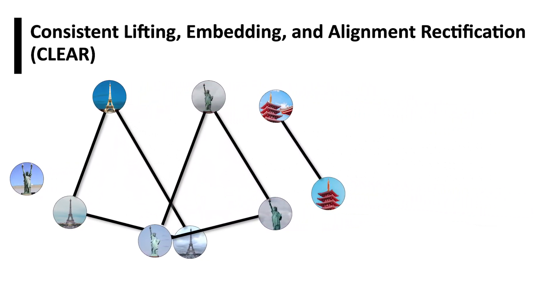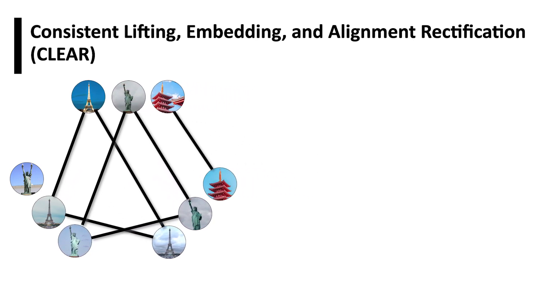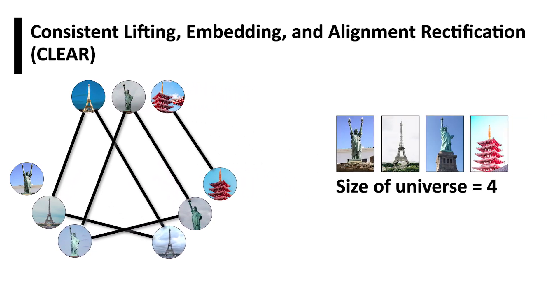CLEAR leverages this insight to obtain an accurate estimate for the size of the universe, and add or remove edges of a noisy association graph to make it cycle consistent.